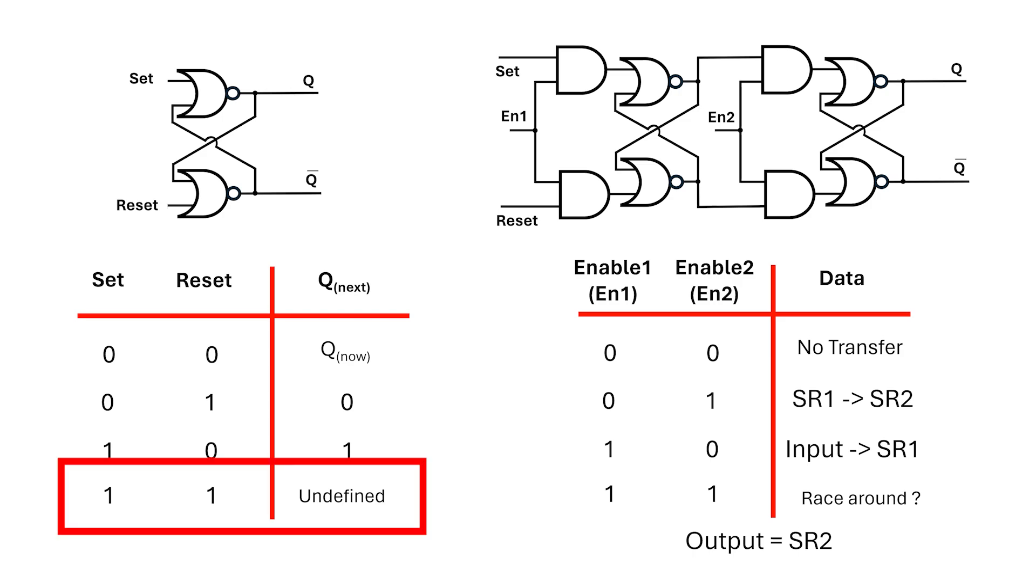But we have some conditions where the circuit acts in an unpredictable manner. First, if set and reset are both asserted, the output's unpredictable, so we want to avoid this case. Second, if both enables are asserted, we're at risk of a race-around condition.